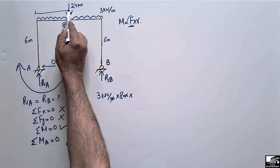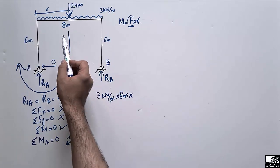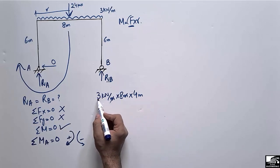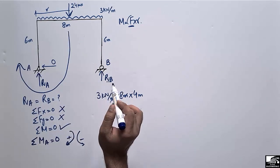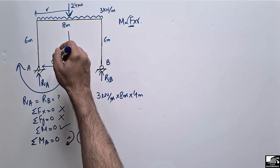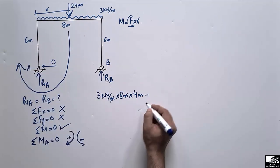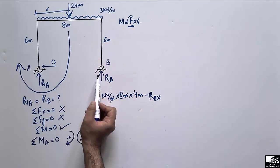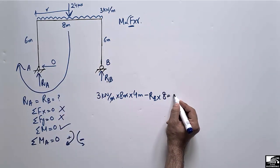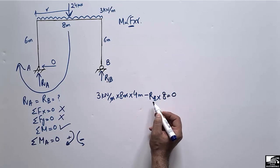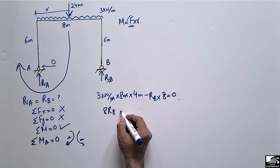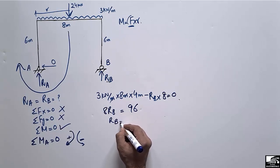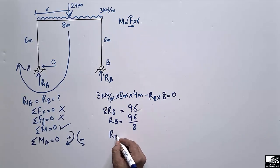The moment due to the UDL about A is 3 × 8 × 4 = 96 kN·m (clockwise, positive). The reaction RB acts upward at B, creating an anti-clockwise moment about A, so it is negative: −RB × 8. Setting the summation of moments about A equal to zero: 96 − RB × 8 = 0, giving RB = 96 / 8 = 12 kN.